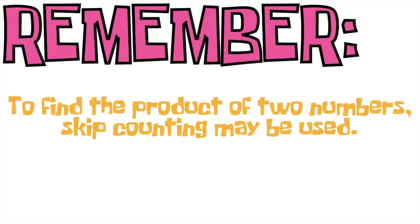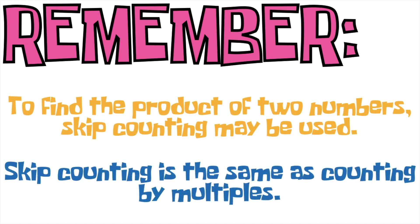Always remember: to find the product of two numbers, skip counting may be used, and skip counting is the same as counting by multiples. I want you to memorize your multiplication table by 2, 3, 4, 5, and 10. Is that clear? Bye!